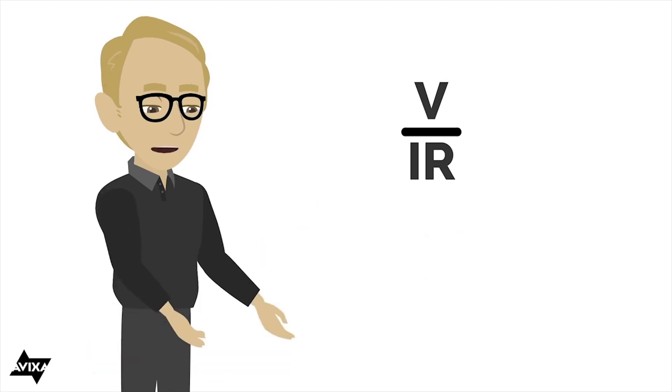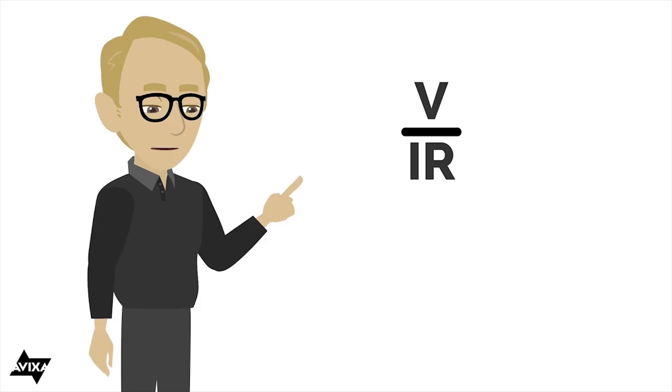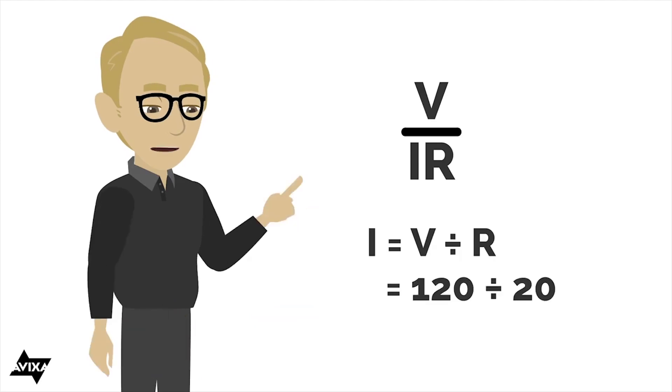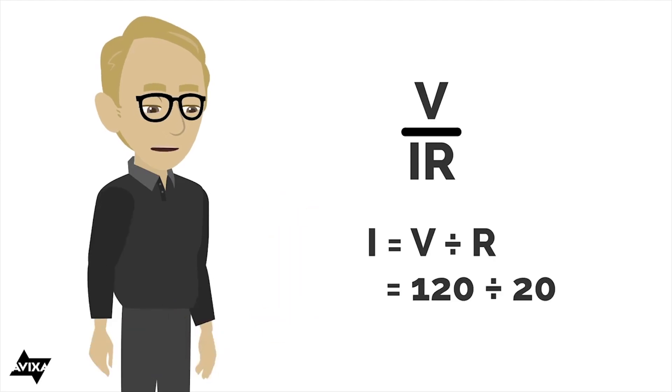Let's say I want to solve for current. That's going to give me the voltage divided by the resistance. And let's say we have a voltage of 120 volts and a resistance of 20 ohms. 120 divided by 20, that's going to give me 6. So 6 amperes worth of current.